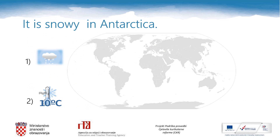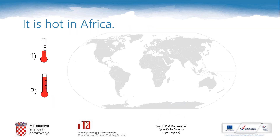There is a sentence and there are two pictures. First, you should choose the right picture that matches the sentence. Then you should choose the continent where to put the picture. Our sentence is: It is snowy in Antarctica — snowy is picture number one, and the continent is Antarctica. It is hot in Africa — hot is picture number two because the temperature is higher; picture number one is just warm. So we need picture number two, and the continent is Africa.